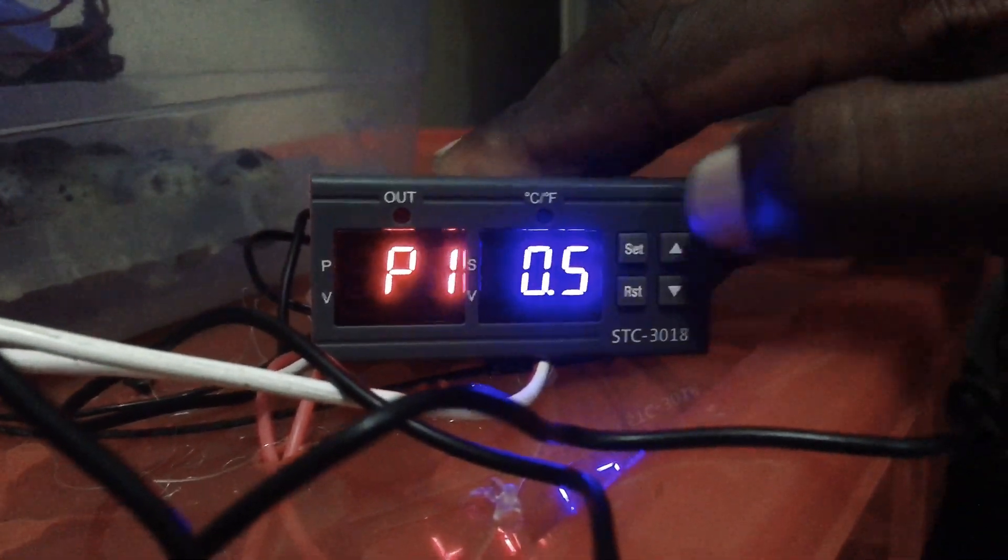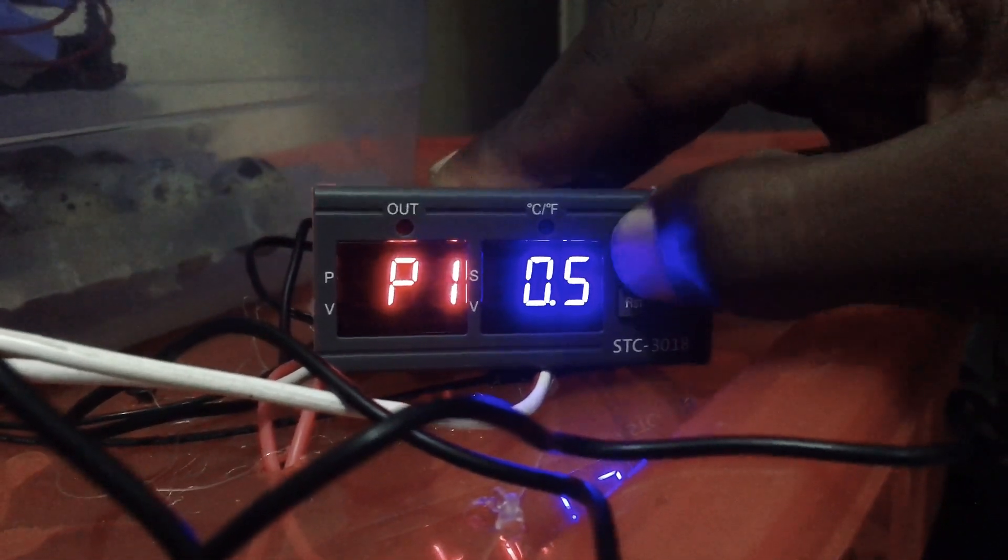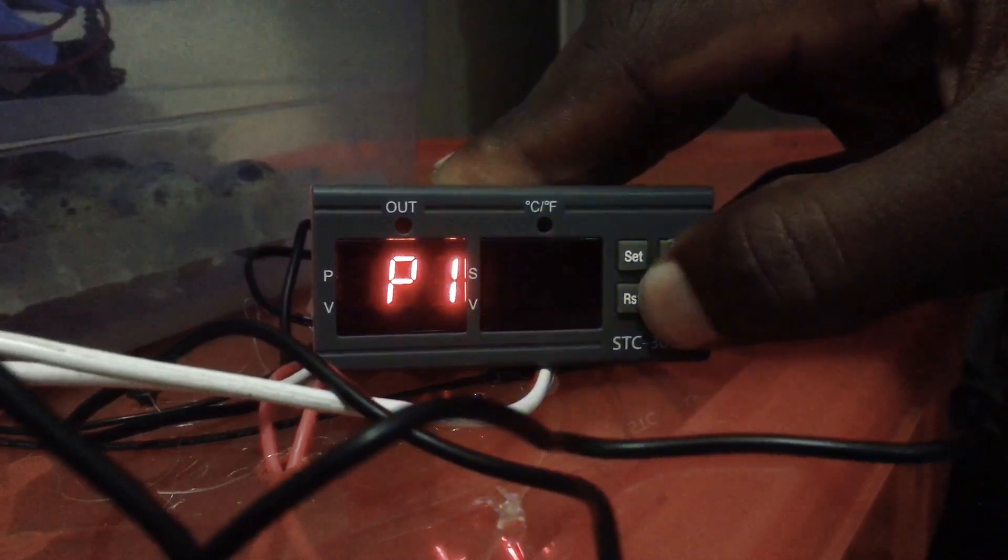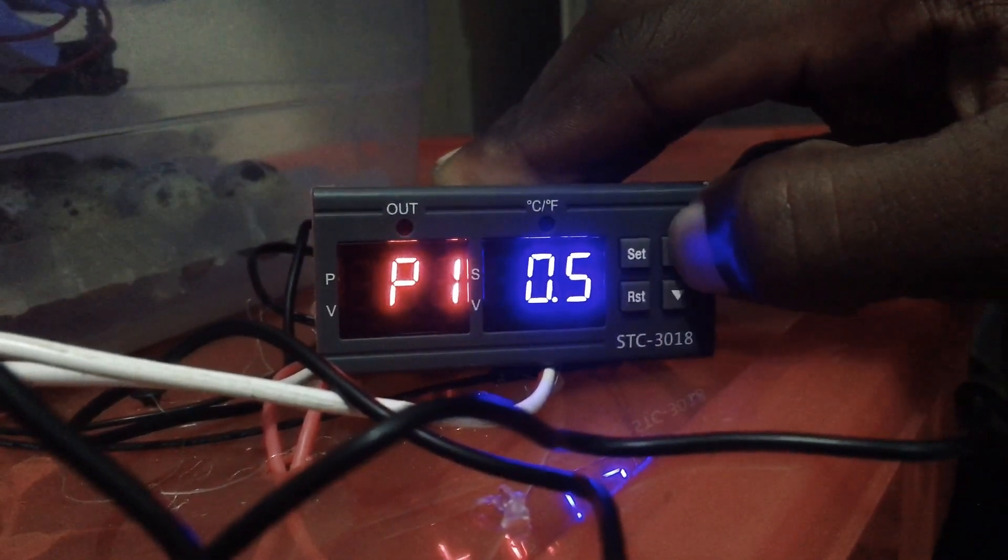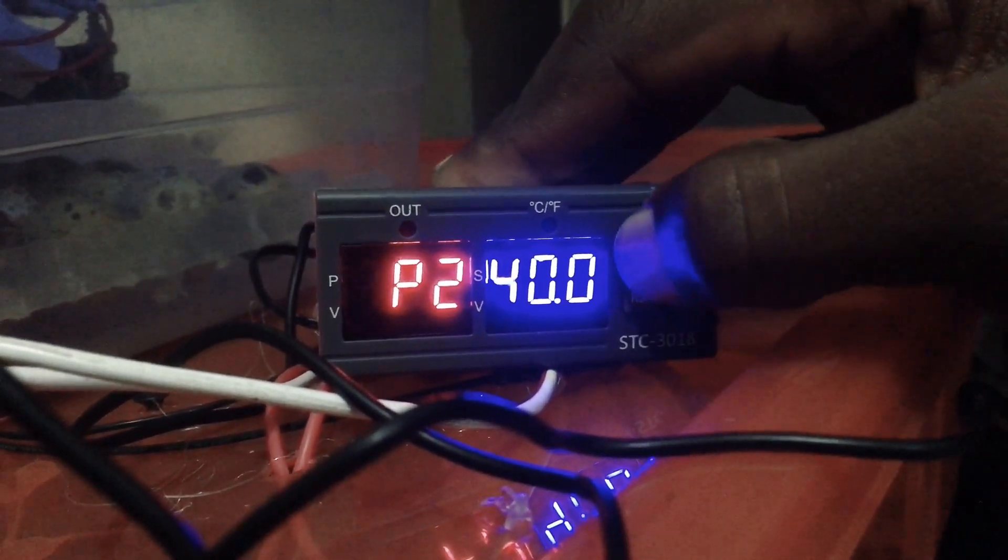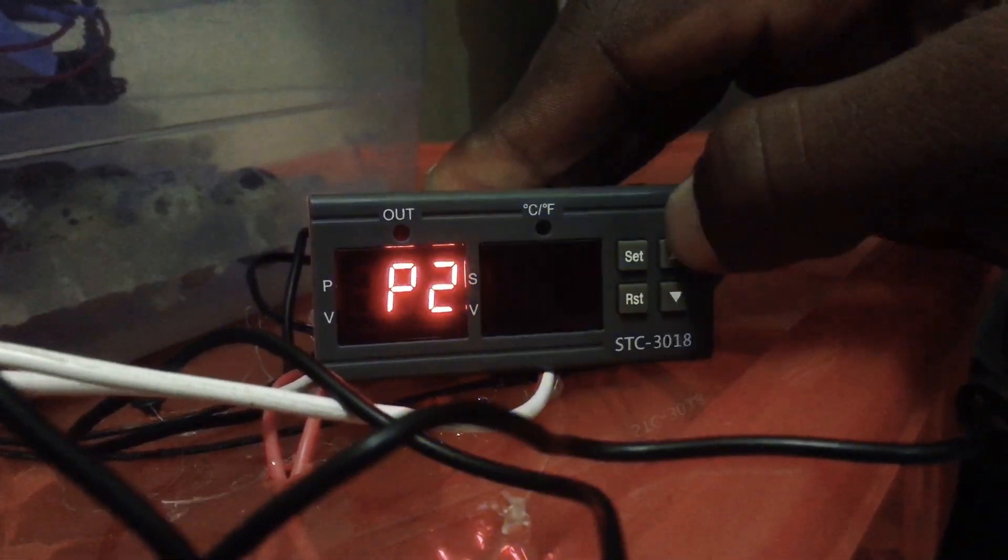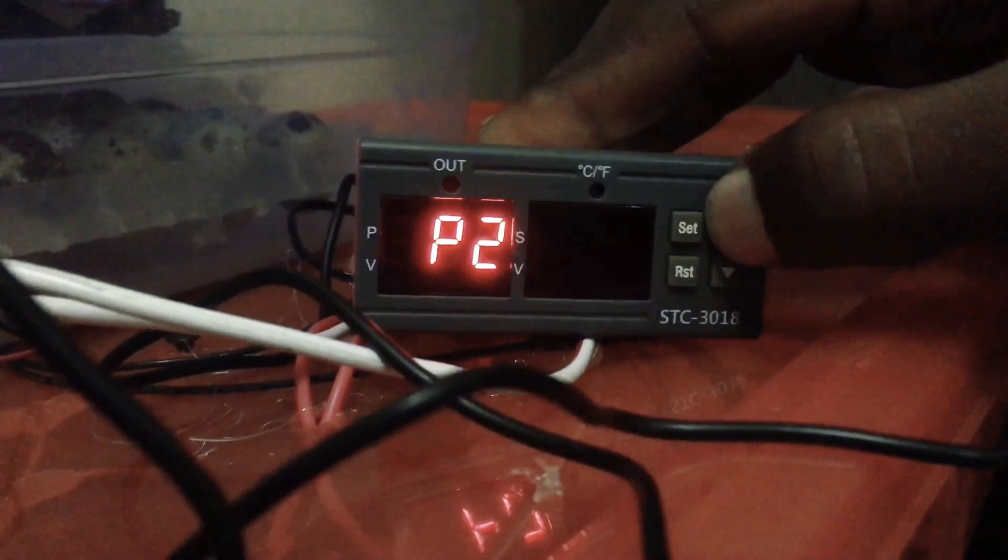You press set again, you press the arrow key up to change it to P1. P1 should be 0.5, so you set it to 0.5. You press set again, you press the arrow key up, you press set again, that's for P2. P2 should be 40.0.